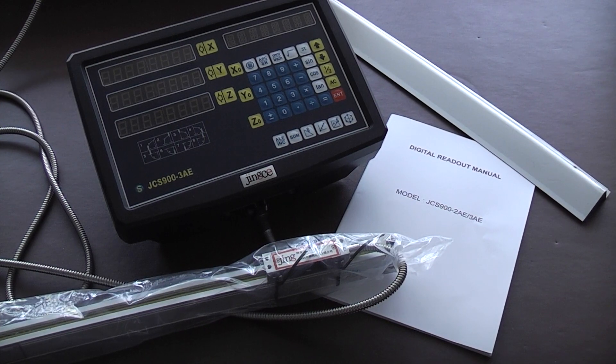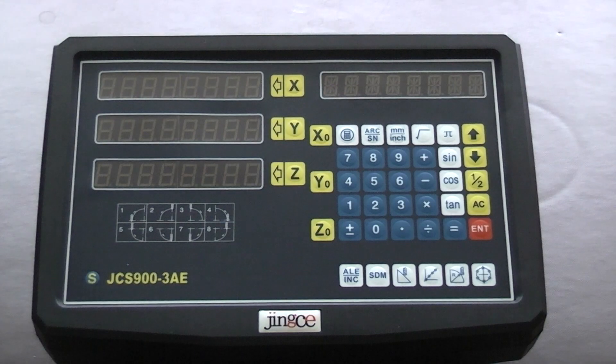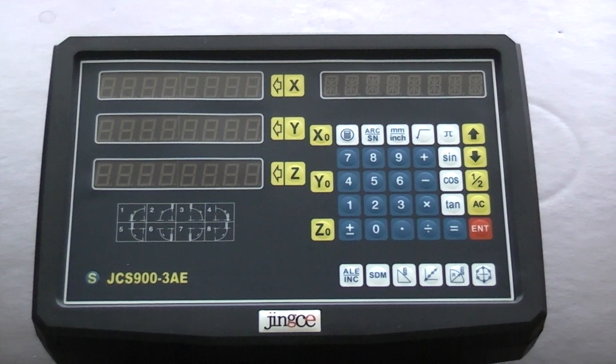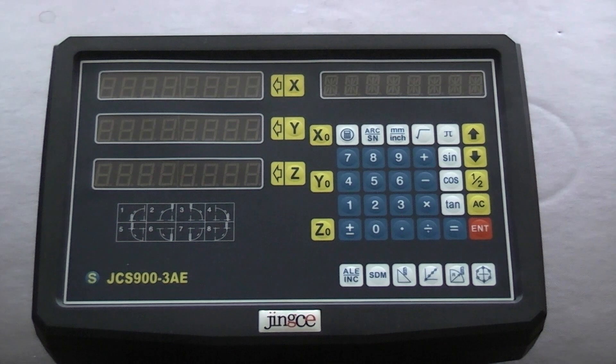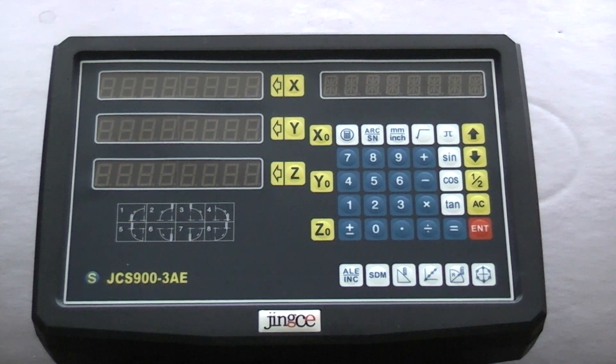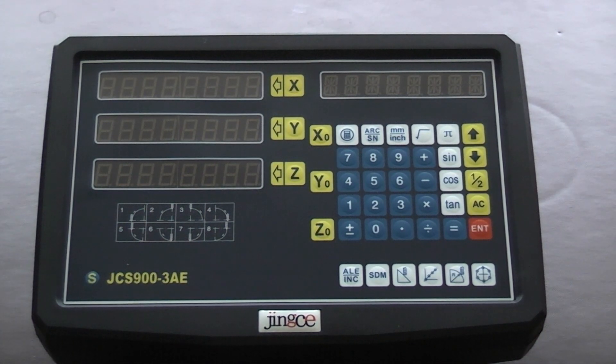So the scales and the display unit have arrived, and I'll go through them one by one. Tell you what you get in the kit, and then we'll look at how you fit them. I'll be discussing fitting them to the machine, also go through a lot of questions that people have asked me. I'll try and give you the answers. So I'm starting as if you know nothing at all about digital readout.